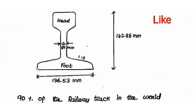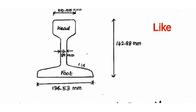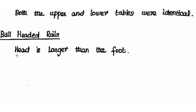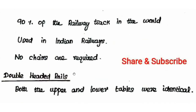If the foot has a larger width, it will transmit the load to a larger area. This gives the track stability and reduces maintenance. That is why we use flat footed rails. Additionally, bull-headed rails are used in points and crossings — this is an important point.